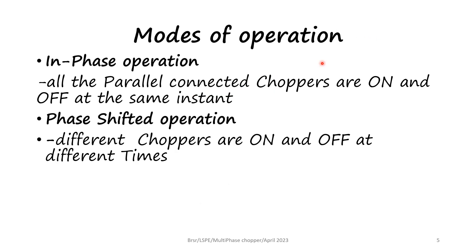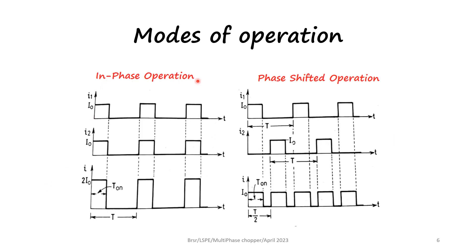There are two modes of operation of multi-phase choppers: in-phase operation and phase-shifted operation. In in-phase operation, all the parallel choppers are on and off at the same time. In the phase-shifted operation, different choppers are on and off at different times. In in-phase operation, chopper one is on during a certain time and chopper two is also on during the same time, and both are off at the same time.